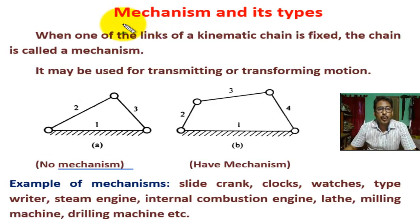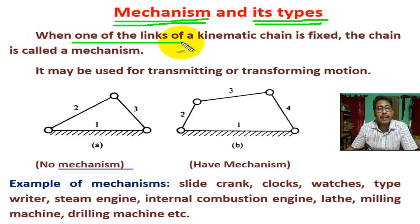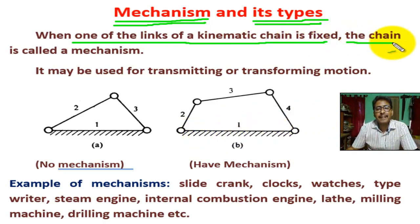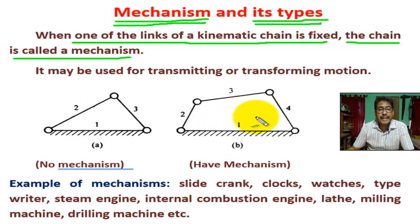Hello students, today we are going to learn what is a mechanism and its types. When one of the links of a kinematic chain is fixed, the chain is called a mechanism. A mechanism is a kinematic chain in which one link is fixed.